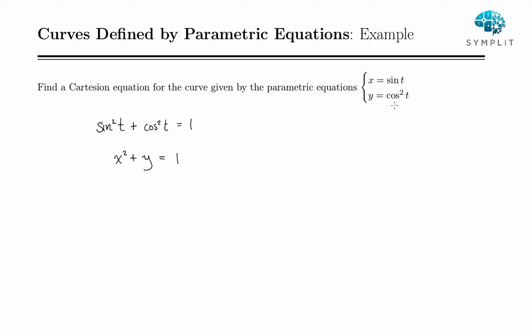Notice y is equal to cosine squared of t, meaning y has to be greater than or equal to 0. It also has to be less than 1. So we can say y must be between 0 and 1.